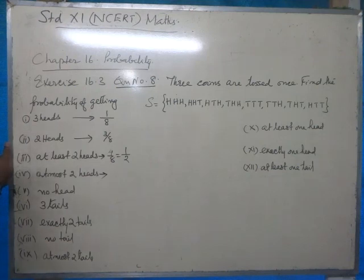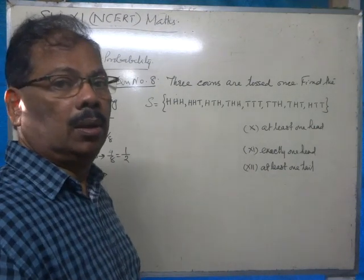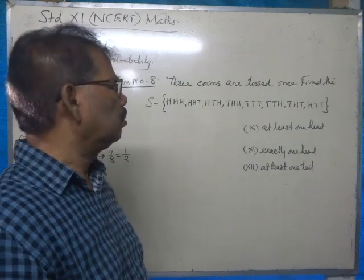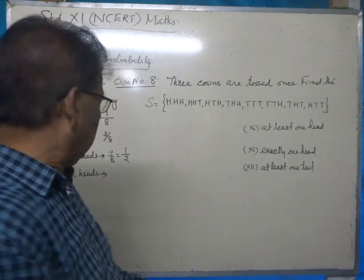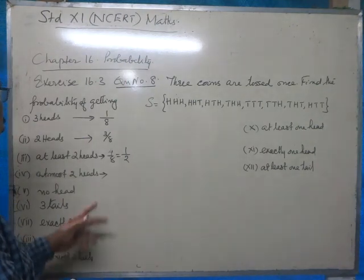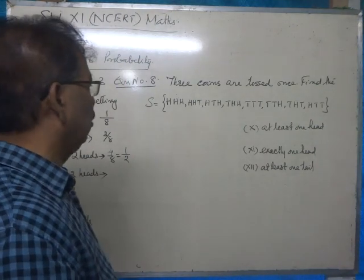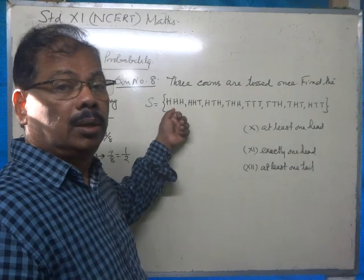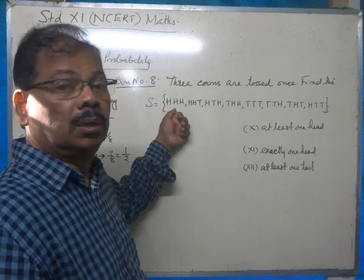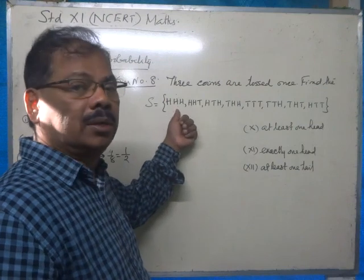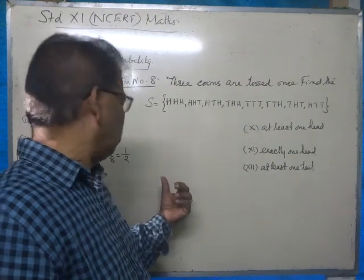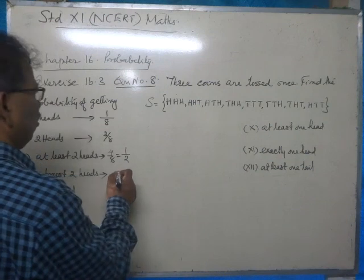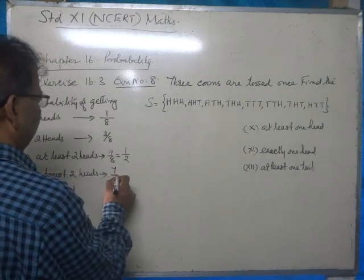Now, at most two heads means the maximum number of heads is two. We cannot include the occurrence where we get three heads. Excluding that one occurrence, the answer will be seven by eight.